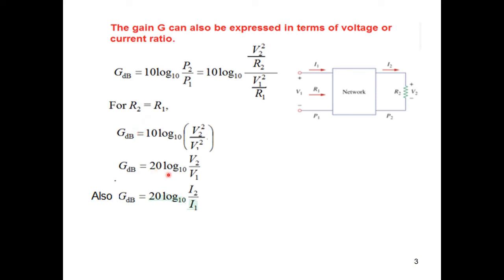So this will become 20 log₁₀ V₂ over V₁. And this is most commonly used that in case of a voltage, we write 20 log or same in case of a current also, it is 20 log of the two currents, output current divided by input current.